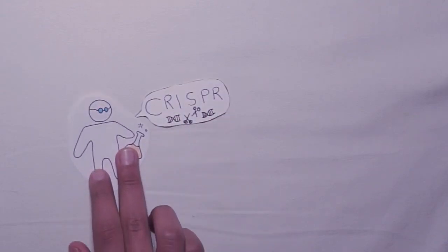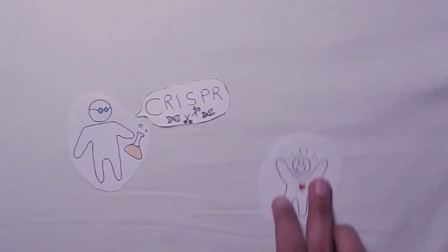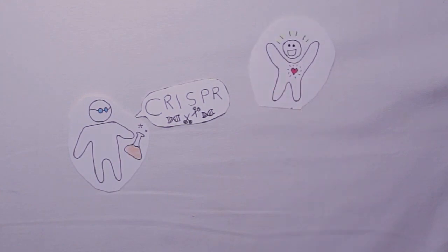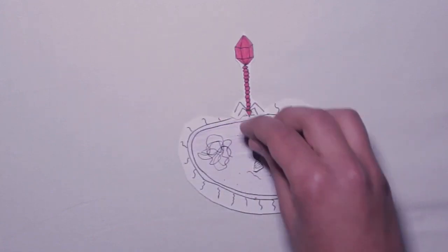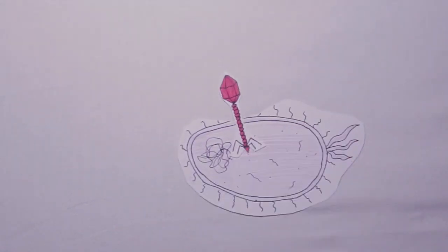The CRISPR technology allows scientists to make changes to the DNA, which implies the possibility of curing genetic diseases. When viruses attack a bacteria, they inject their own genetic code inside. If the bacteria survive...